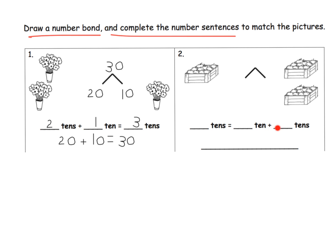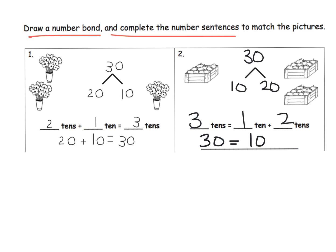Similarly, for this addition problem, we've got two 10s here and one 10 here. So one 10 plus two 10s is equal to three 10s. Our number bond shows 30 at the top, with 10 and 20 as the parts, and 30 is equal to 10 plus 20. Parents and teachers, I love that Eureka Math has students reversing things around the equal sign — they're not always putting the answer on the right. Sometimes the answer is on the left of the equal sign, and that's a really powerful flexibility we want to develop in our students.